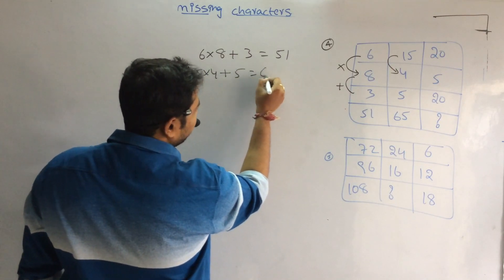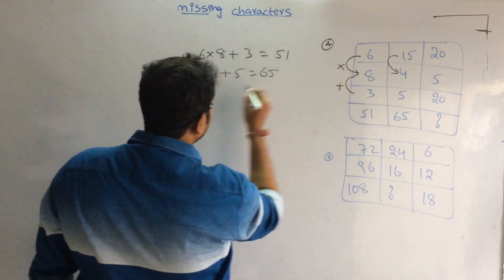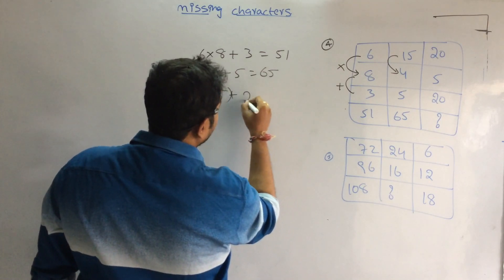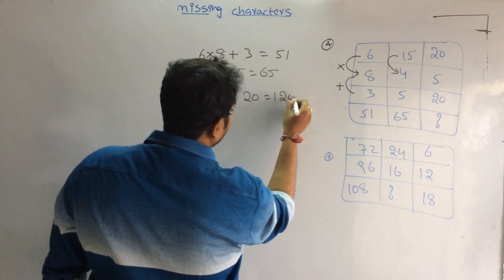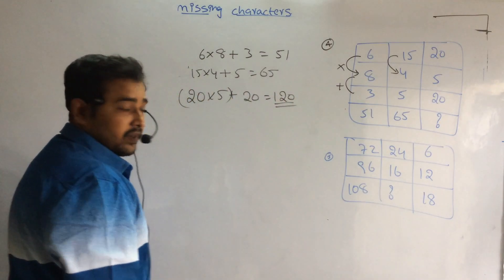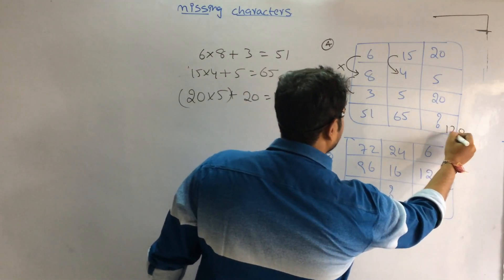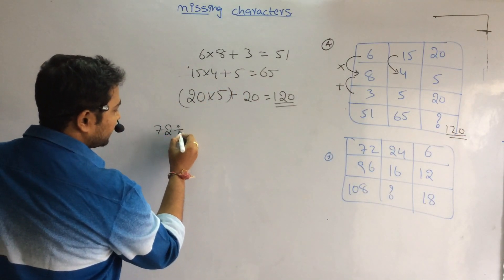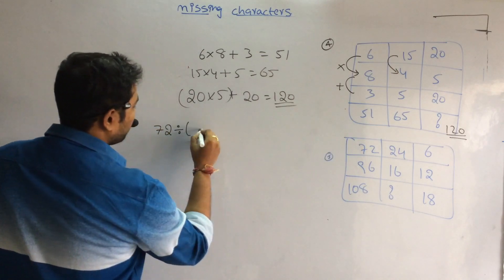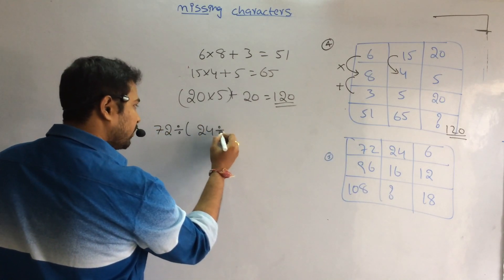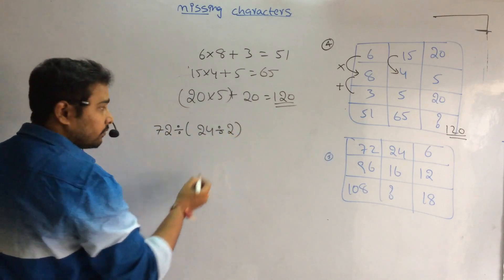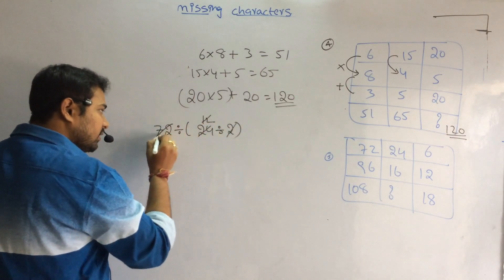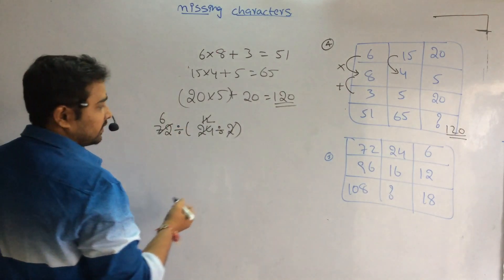72 divided by 24, divided by 2. 2×1 is 2, 2×12 is 24. 12×1 is 12, 12×6 is 72.